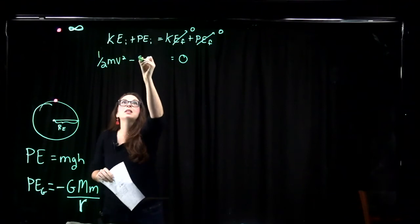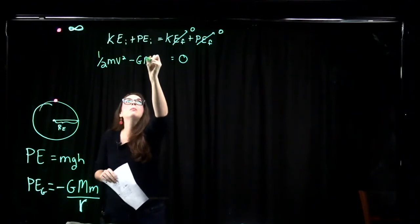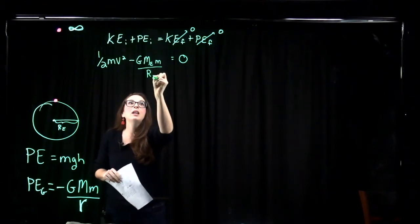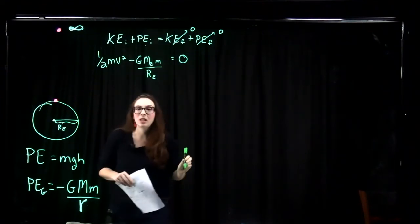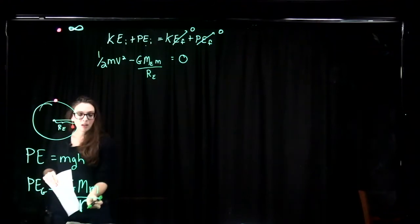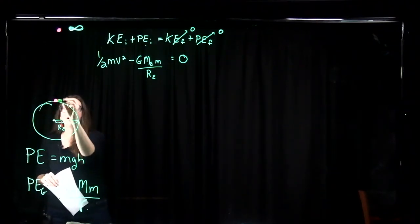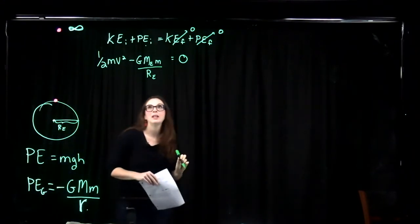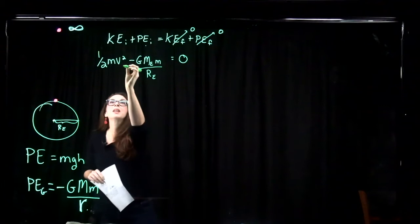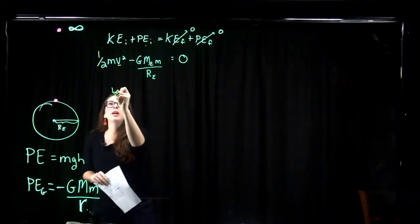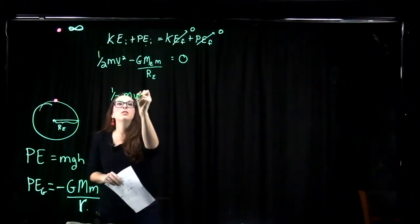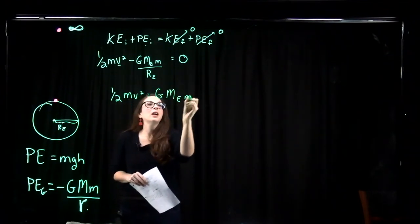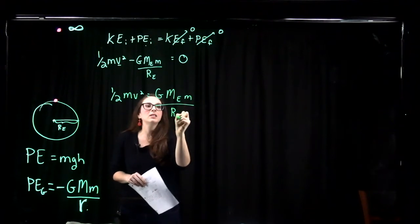Then we add the initial gravitational potential energy: minus G times the mass of the Earth times little m, divided by R. In this case, for the initial gravitational potential energy, R is just the radius of the Earth — that's how far we are from Earth's center when sitting on the surface. So if we solve for the escape velocity, we have one-half m v squared equals G times the mass of the Earth times little m, divided by the radius of the Earth.